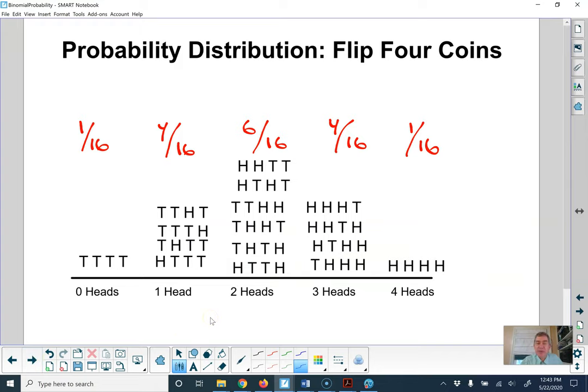A quick review with a simple one. Flipping coins. This is your distribution from when you flipped four coins. There were 16 possible outcomes. Two choices for the first coin, two choices for the second coin, two choices for the third coin, and two choices for the fourth coin. Two to the fourth is 16. And there you have them.